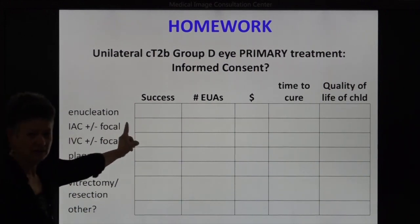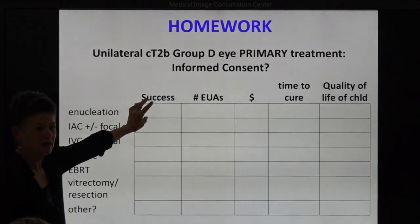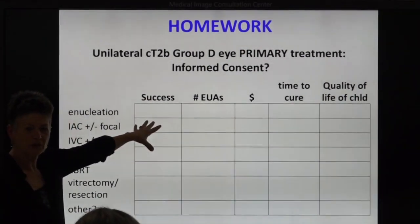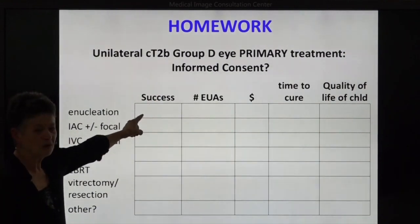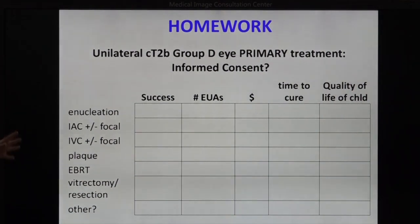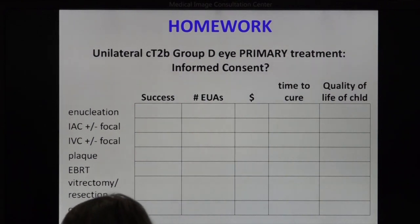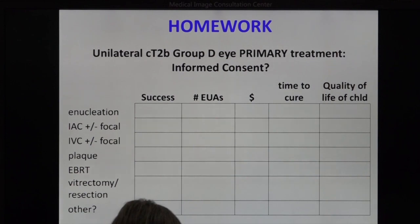Then go through these topics — you should write this down because I never got a printout to give you. Write it in your notes and then consider: what is your opinion of the success rate? You might put a percentage for that. The number of examinations under anesthetic it might entail for those treatments. The dollar cost in your country, in your hospital — what would that treatment cost? You don't need to know it accurately, but you have an idea.